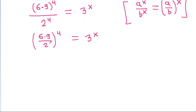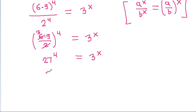Now, 6 divided by 2 is 3, and 3 times 9 is 27, so we get 27 power 4, that is equal to 3 power x. And 27 is 3 power 3, so this becomes (3 power 3) power 4, that is equal to 3 power x.